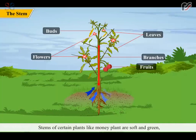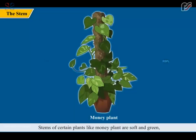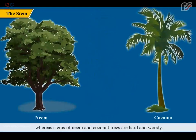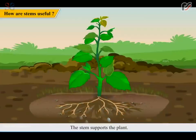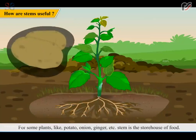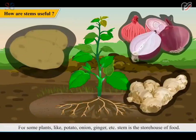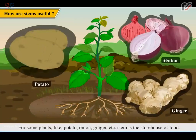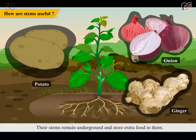Stems of certain plants like money plant are soft and green, whereas stems of neem and coconut trees are hard and woody. The stem supports the plant and carries food to its different parts. For some plants like potato, onion, ginger etc., the stem is the storehouse of food. Their stems remain underground and store extra food in them.